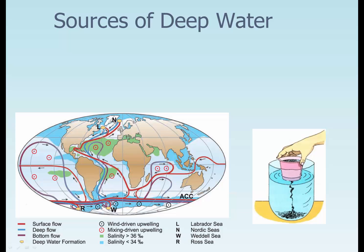Sources of deep water — deep water formation. You can see it up here in the Labrador Sea, the Nordic Sea, and down here in the Weddell Sea and Ross Sea. You have places where water upwells and places where it downwells, and you've got warm water in red and cold water in blue and purple as it's warming up coming up towards the surface. You can see this big flow — this is the conveyor belt.